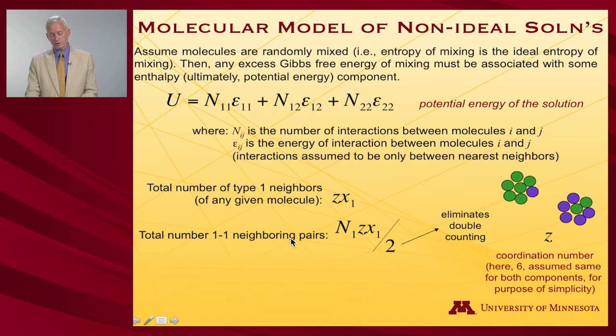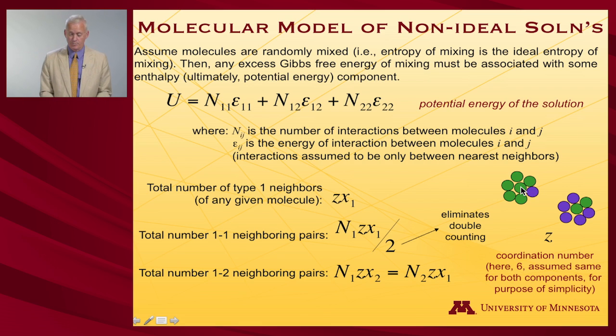So what's the total number of one-one pairs? Well, it's coordination number times the mole fraction times how many molecules one are there in the first place. And then I have to divide by two because otherwise I'll double count. When I sit on one molecule one and I say, oh yeah, I've got this neighbor over here, that's a one-one pair. Eventually I'm going to sit on this molecule and say, oh, there's a one-one pair over there. So I just have to divide by two. I don't have that problem when I compute one-two pairs. So n₁ times z times x₂, and obviously that works the other way around, n₂ z x₁.